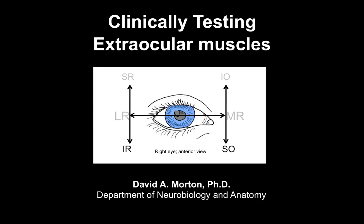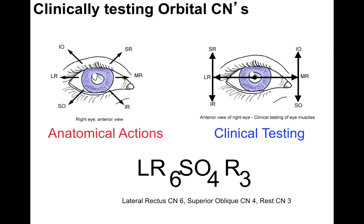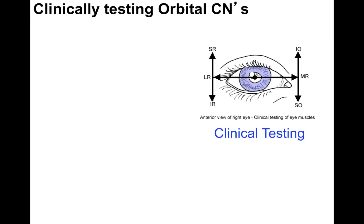We're now going to talk about clinically testing the extraocular muscles. This picture shows the anatomical actions on the left of the screen and the clinical testing of the muscles on the right side of the screen. What is the difference? That's the purpose of this tutorial.